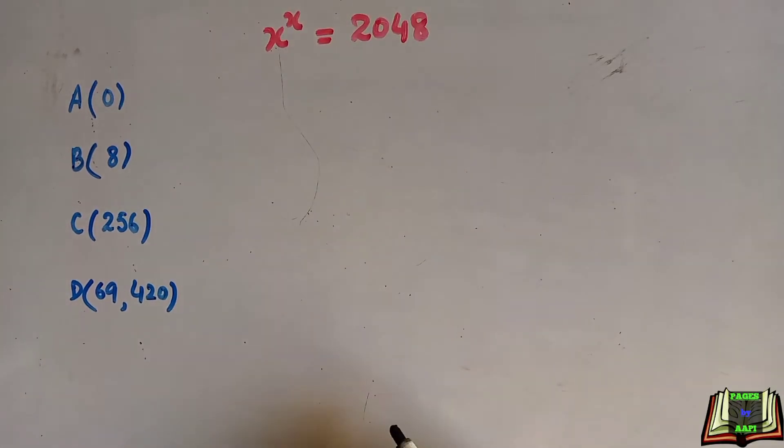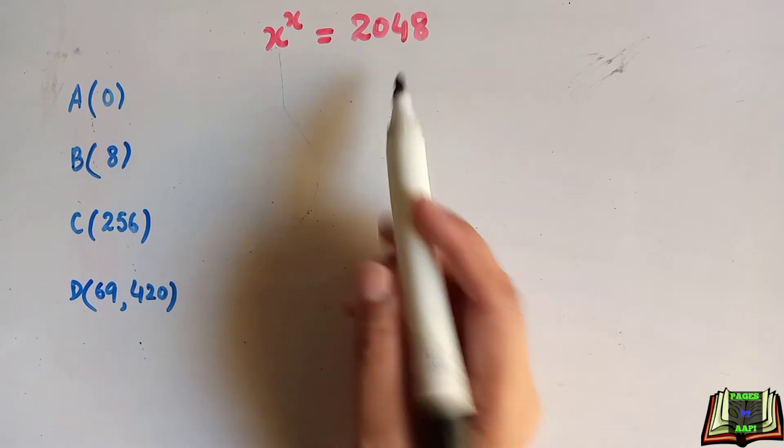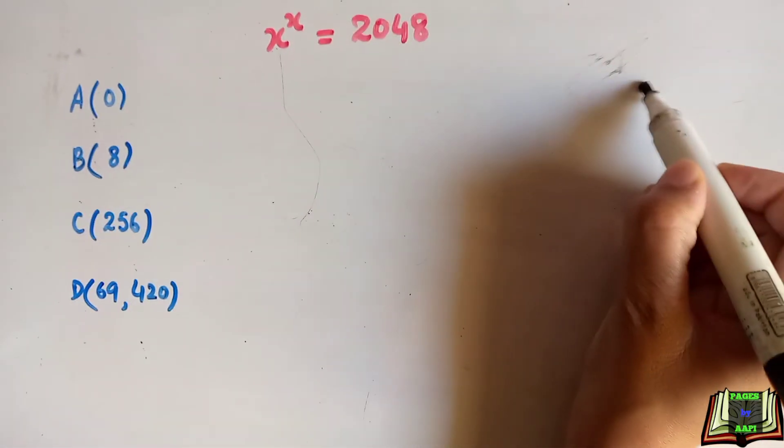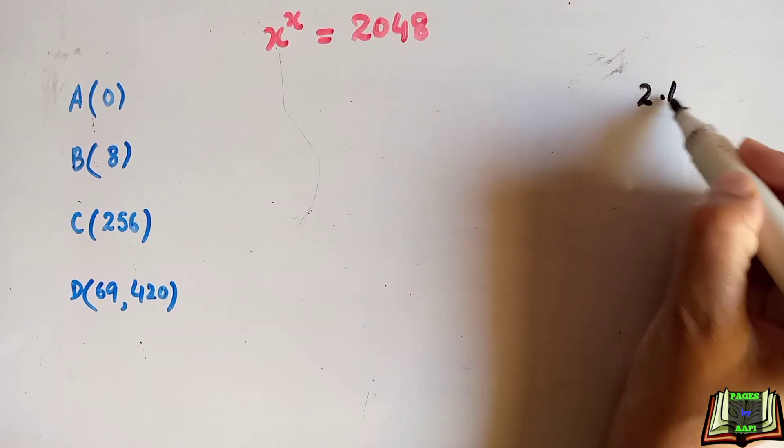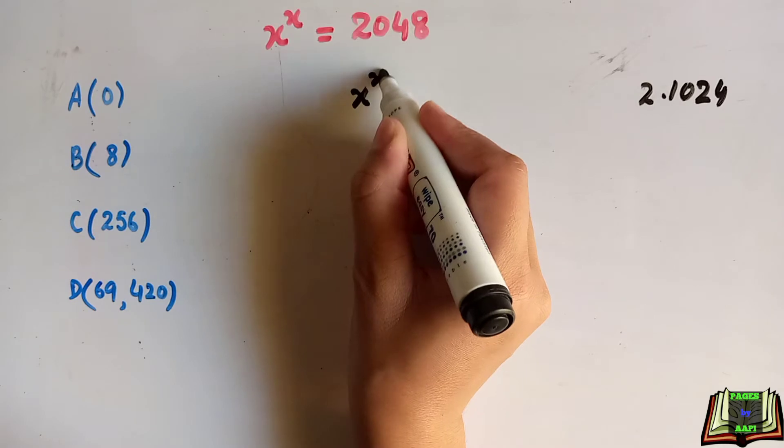Welcome you all with an interesting math puzzle: x to the power x equals 2048. We have to find the value of x. This 2048 can be written as 2 into 1024, so we are going to write